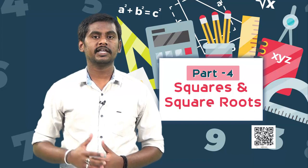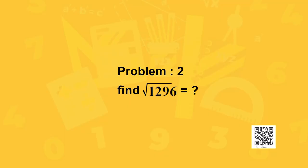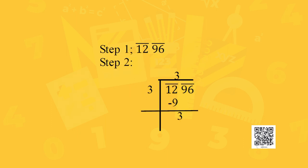Now, using the same steps, let us find the square root of 1296. In step 1, put bars on every 2 digits starting from the units place: 96 gets one bar and 12 gets the second bar. In step 2, choose the largest integer whose square is less than or equal to 12. We know 3 squared is strictly less than 12, which is less than 4 squared. So 3 × 3 = 9, and subtracting 9 from 12 gives remainder 3.